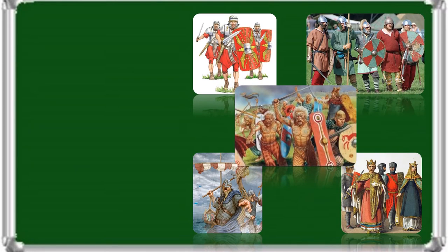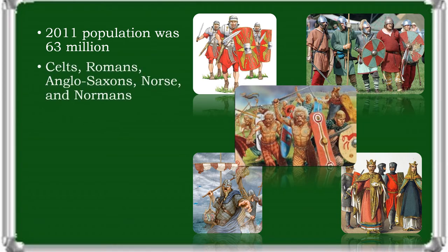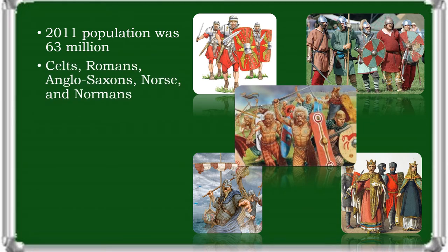Northern Ireland is part of the United Kingdom. In the 2011 census, the total population of the United Kingdom was over 63 million. Historically, indigenous British people were thought to be descended from the various ethnic groups that settled there before the 12th century: the Celts, Romans, Anglo-Saxons, Norse, and the Normans. Welsh people could be the oldest ethnic group in the UK.